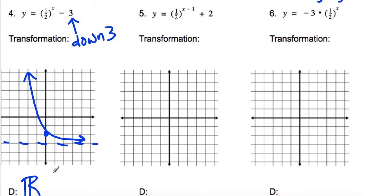Our next one has two transformations. This minus 1 is going to move it right 1. And the 2 is going to move it up 2. So we're going to take that point 0, 1, that intercept. We're going to move it right 1 and up 2.